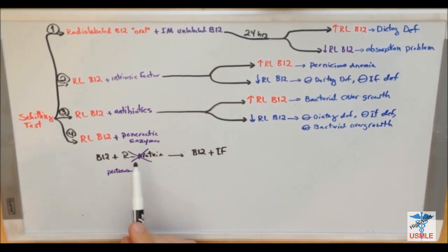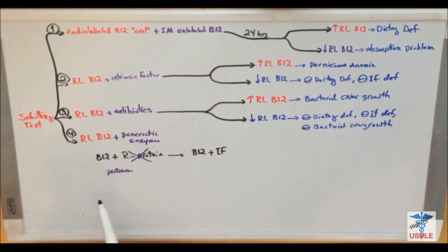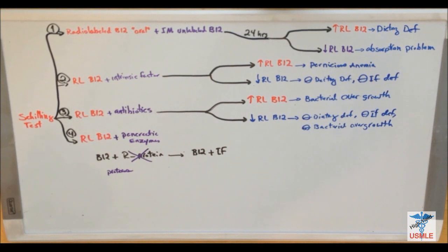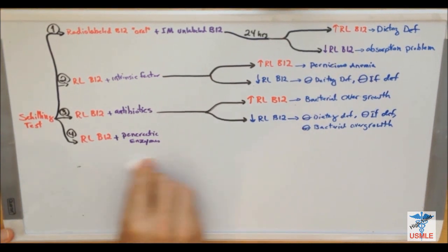And then, it can get absorbed. So, if you don't have pancreatic enzymes, you will not be able to get rid of this R protein. And, if you cannot get rid of this R protein, your B12 never gets free, and it will never bind to the intrinsic factor. So, it will not be absorbed. So, this is the reason you give pancreatic enzymes.